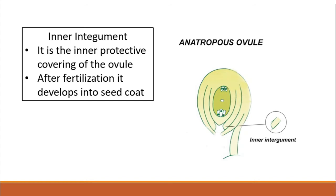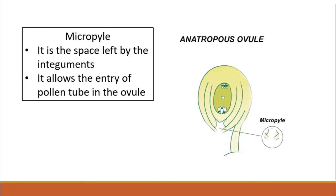The micropyle is the small opening left where the integuments do not fully close — there is a space between the two integuments. This opening allows the entry of the pollen tube, which enters through the micropyle during fertilization.